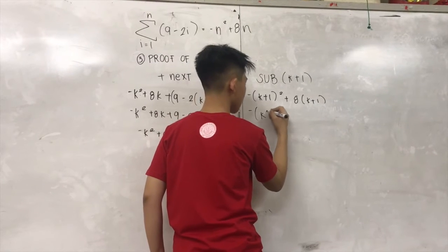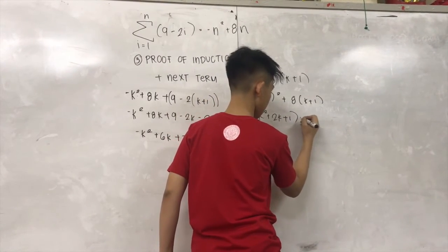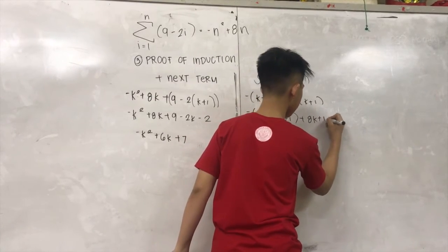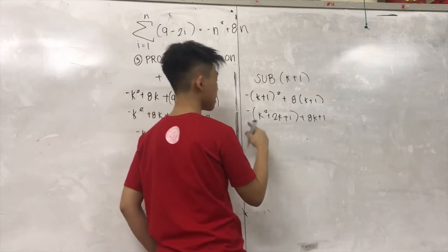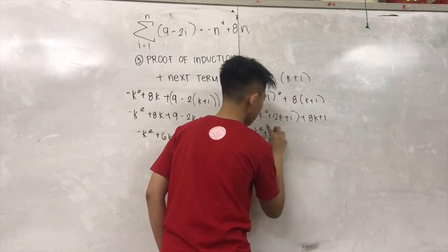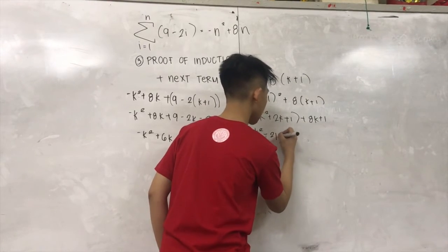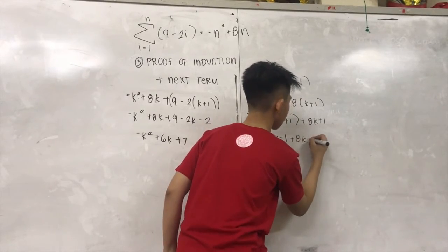Negative (K squared plus 2K plus 1) plus 8K plus 8. So, we will distribute the negative outside the difference. So, negative K squared minus 2K minus 1 plus 8K plus 8.